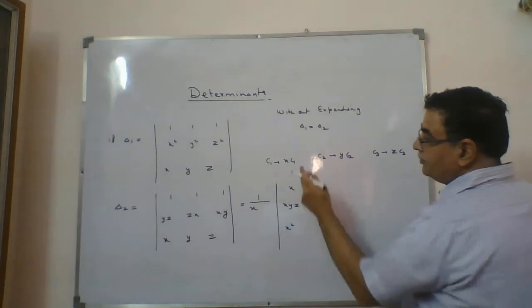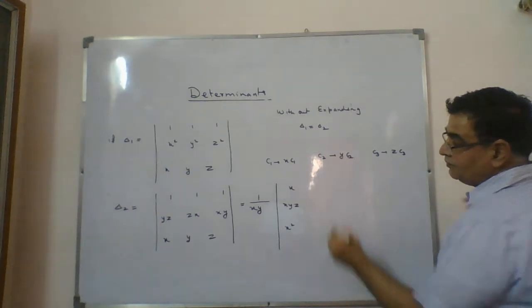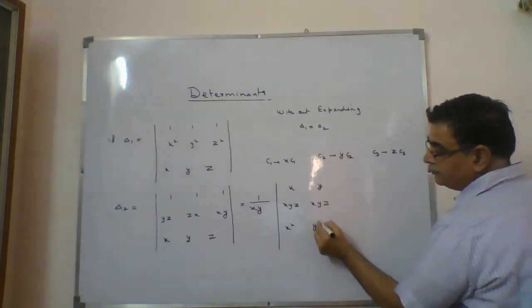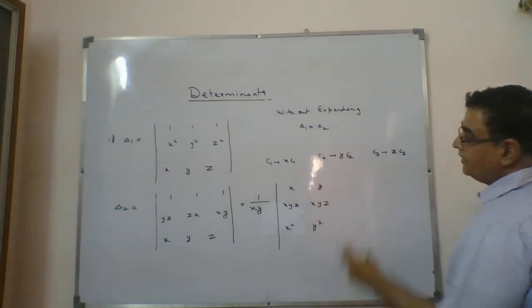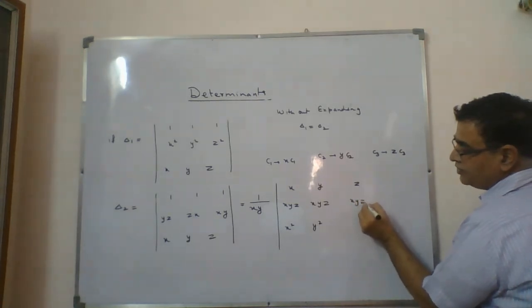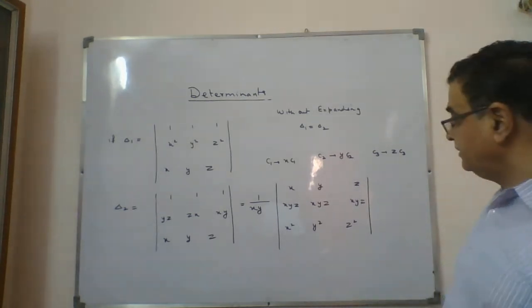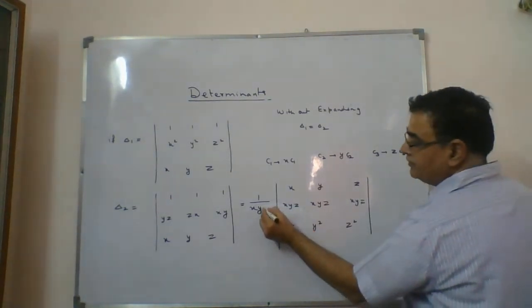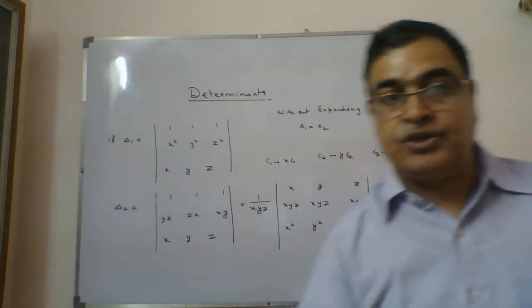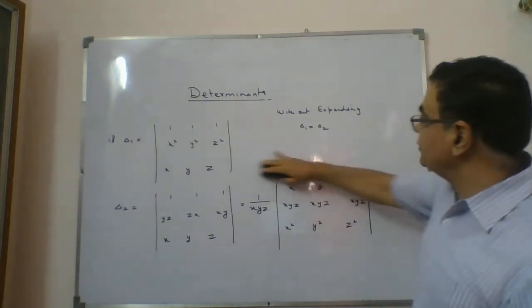So column 1 becomes x·xyz = x², column 2 is multiplied by y so it is divided by y as well giving y·xyz = y², and column 3 with z gives z·xyz = z². After this operation, you divide by z since you multiplied by z. This is a key operation to remember.